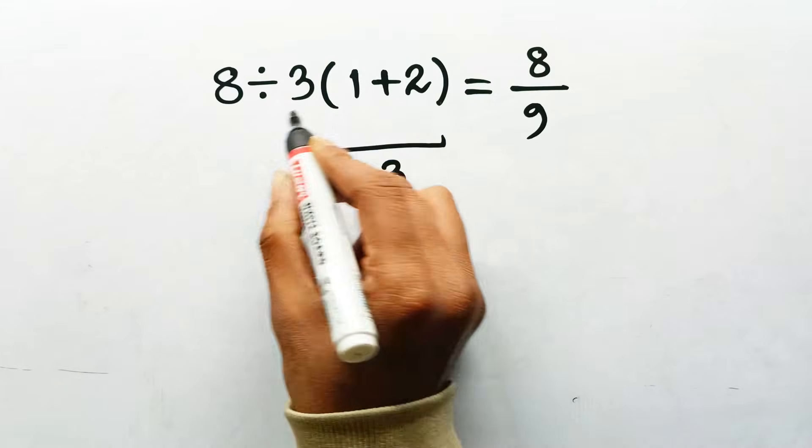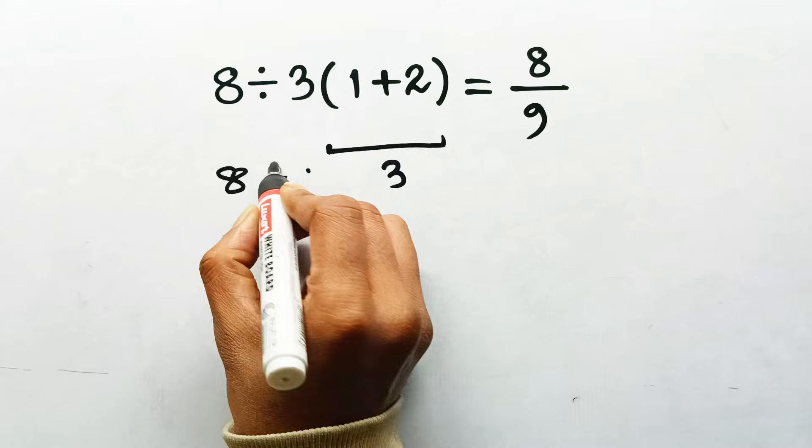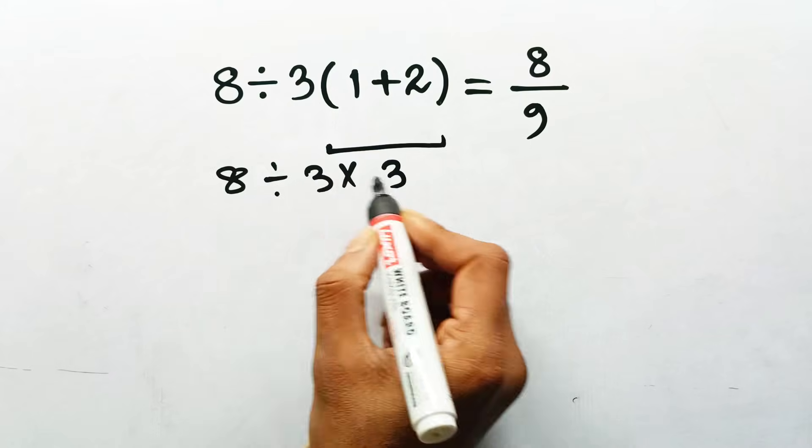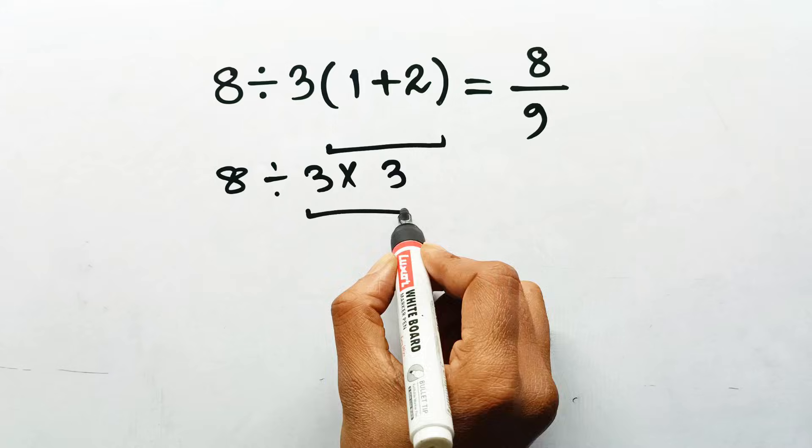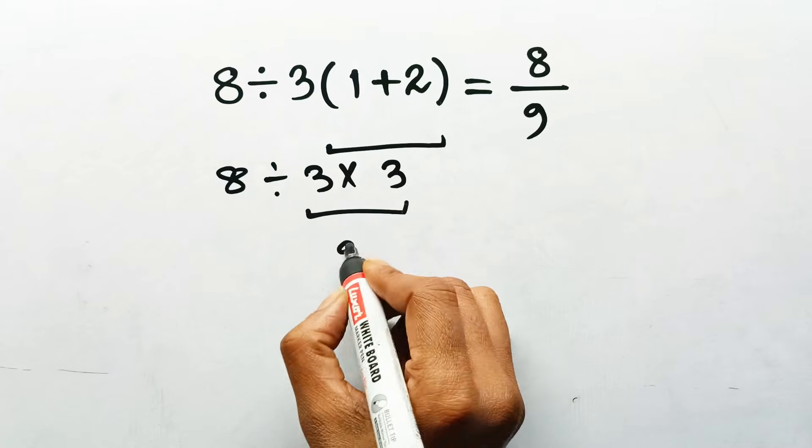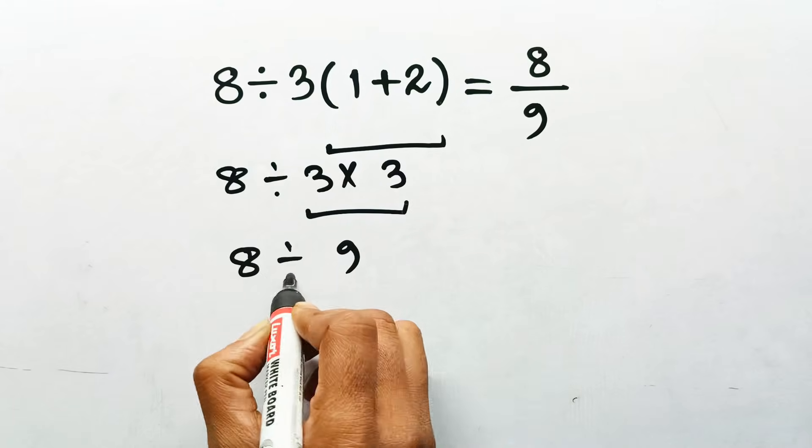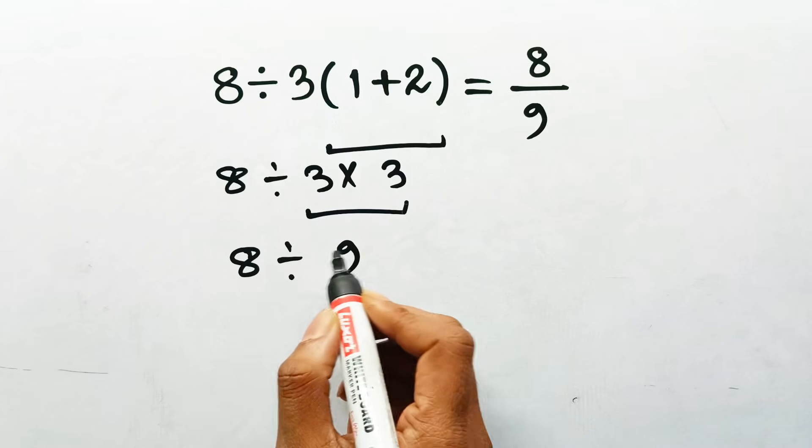1 plus 2 is 3, so now it looks like 8 divided by 3 times 3, and then, this is where things go off the rails, they quietly multiply that 3 with the other 3, get 9, and proudly say, 8 divided by 9, done. Mic drop.